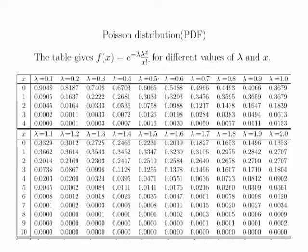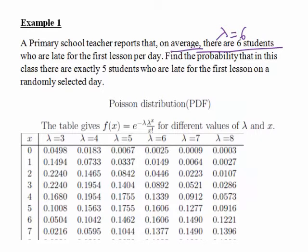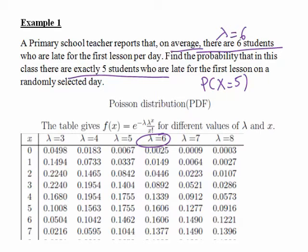The full Poisson distribution table we're working with has different values of lambda in different rows — so lambda equals 6 would be down here. We'll focus on this section of the table. Since we want exactly 5 students being late, that's a probability of x equal to a particular number, so we use the PDF table — the probability density function table. Looking at the row for lambda equals 6 and the column for x equals 5, we find at their intersection that the probability is 0.1606.